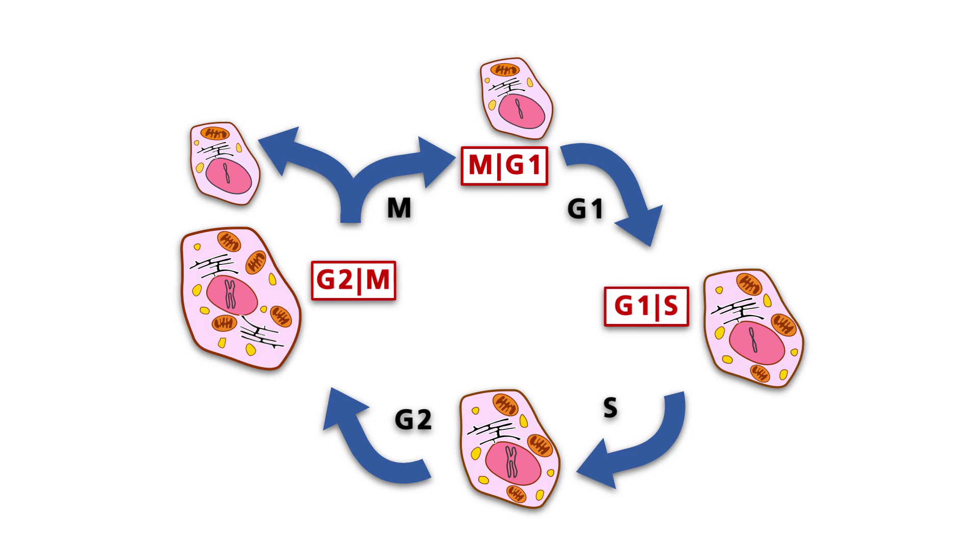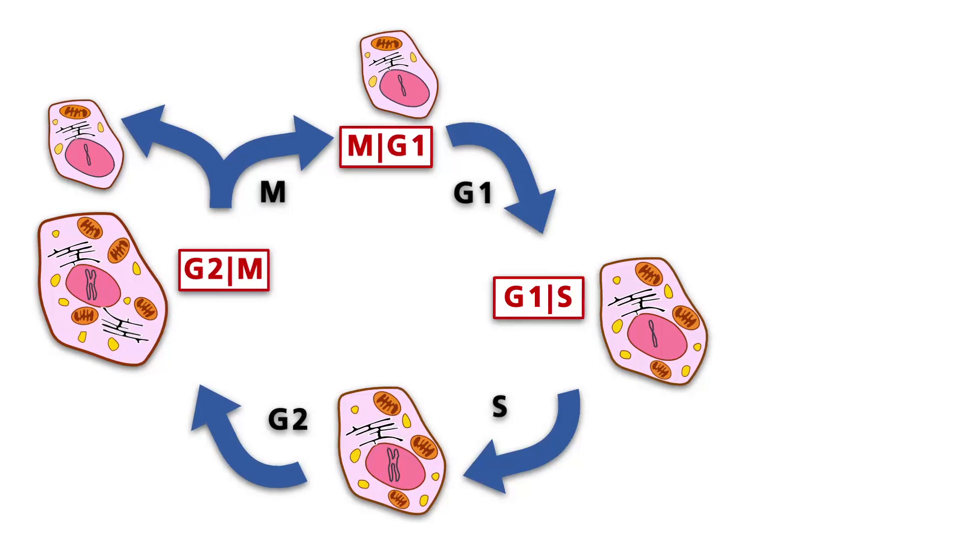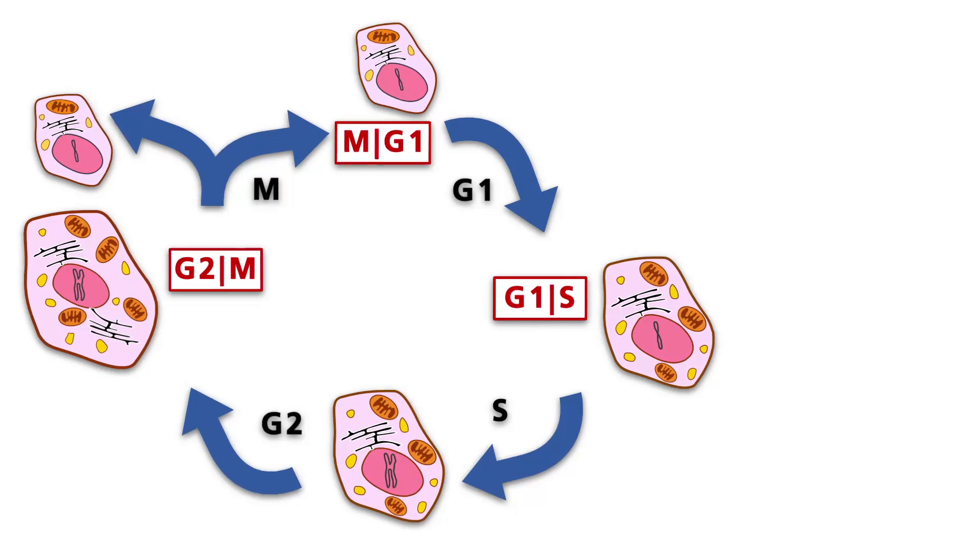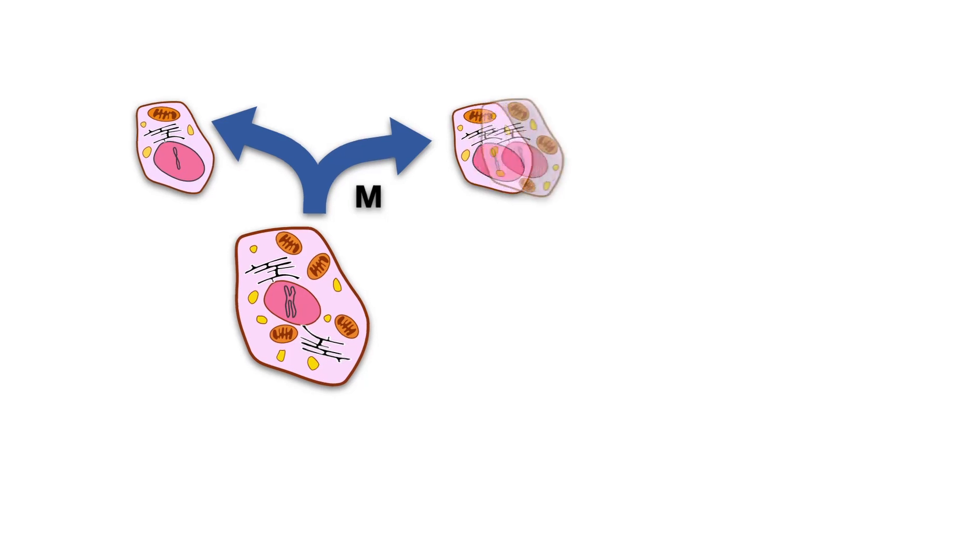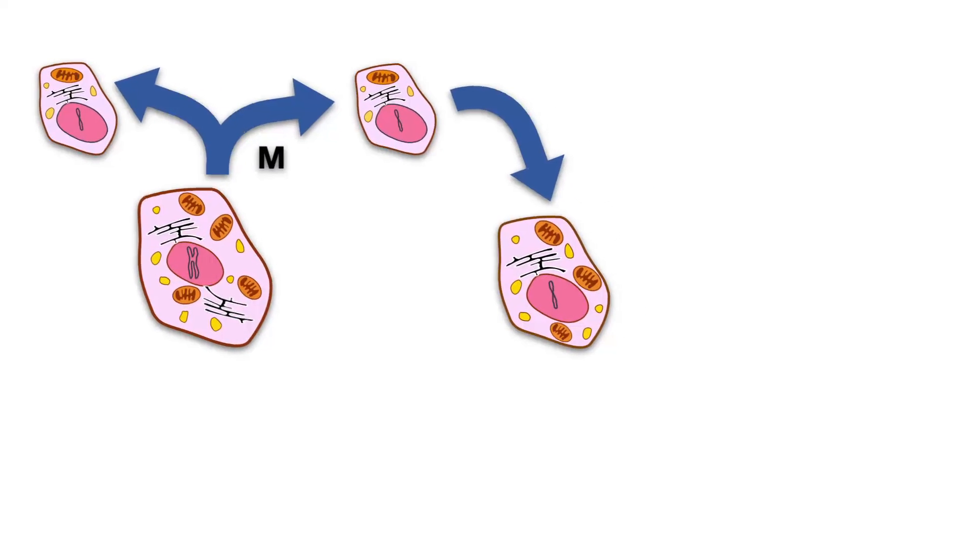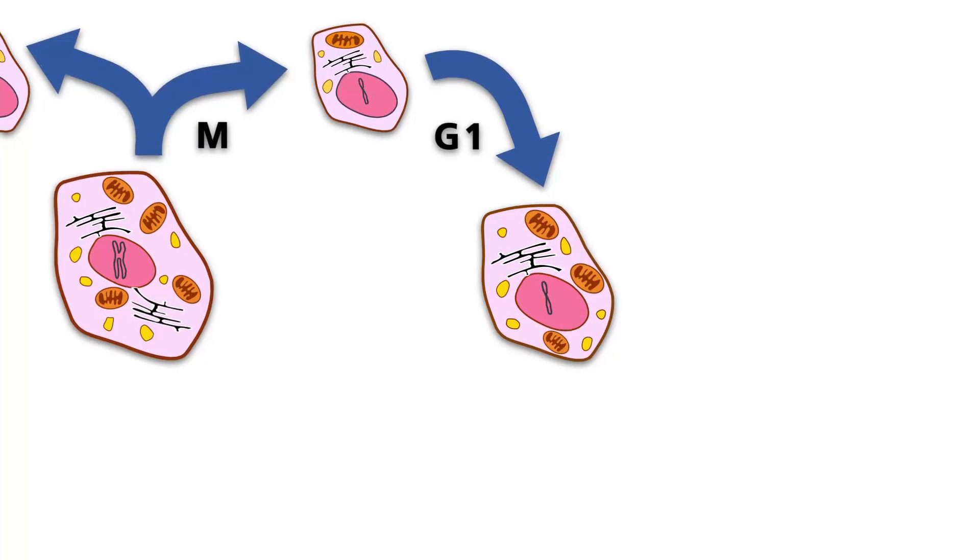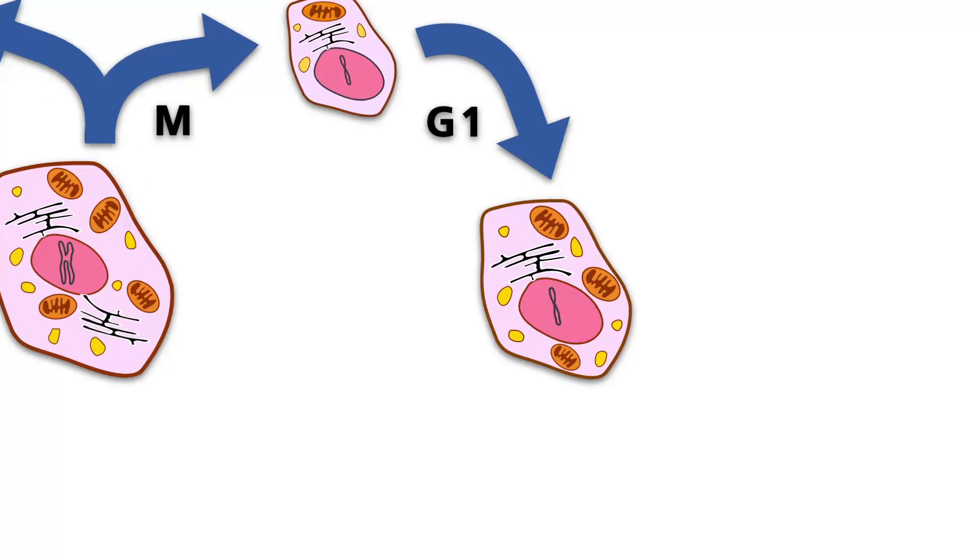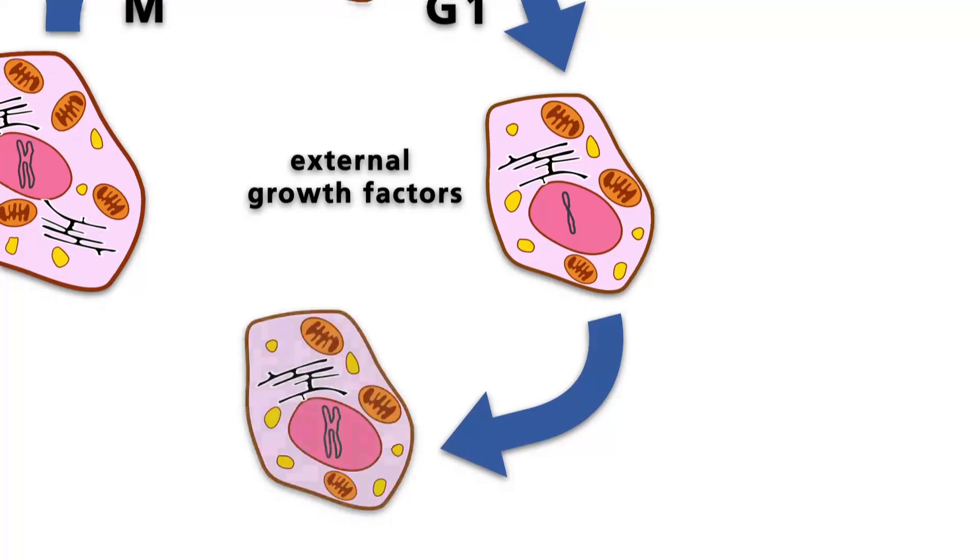The checkpoint that plays the most important role in cell cycle regulation is G1S, also called the restriction or R-point. For a cell to overcome the R-point and start DNA synthesis, two necessary conditions must be fulfilled. First, the cell needs to contain a large number of active mitochondria producing ATP, and second, the cell must be stimulated by external growth factors.